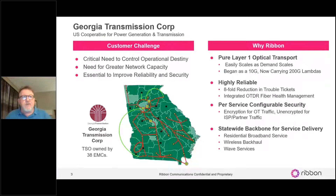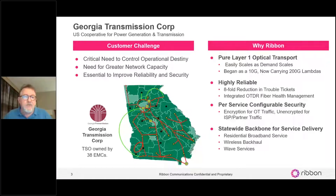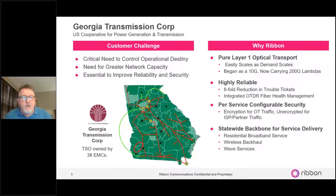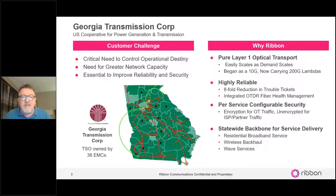Here's one example — a longtime customer of ours, Georgia Transmission. This is a power generation and transmission company in Georgia. What started out as an initial 10-gig network has grown to a network that now carries 200 gig per wavelength. It services 38 electrical co-ops across the state with both their internal and external traffic. They are now providing residential broadband service, wireless backhaul, WAVE services, and innumerable opportunities for revenue from other co-located providers. Apollo is our layer one platform.